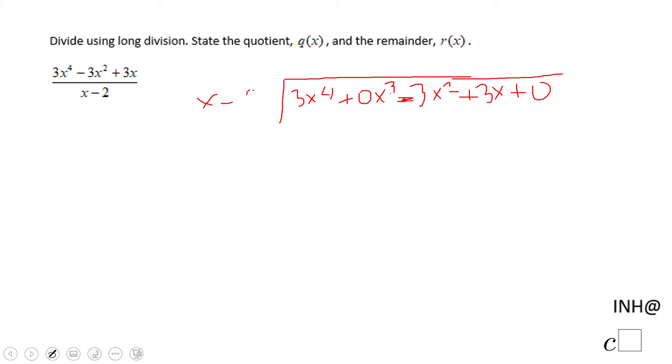Divide by x - 2, and we're going to do a guess and check strategy. We think about an expression that multiplied by x is going to give us 3x to the 4th power. So what is that? Obviously that is 3x³, right? 3x³ times x is 3x⁴, 3x³ times negative 2 is negative 6x³.